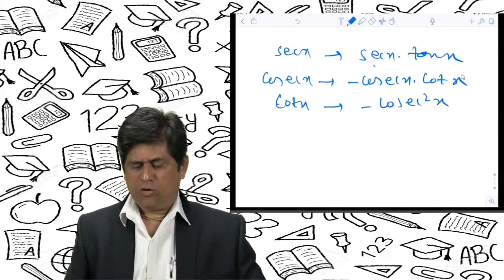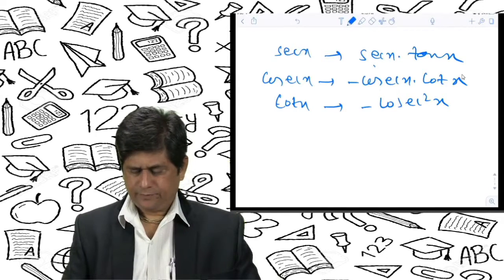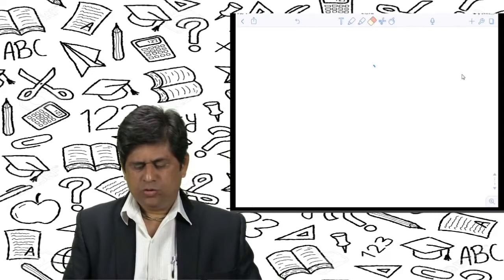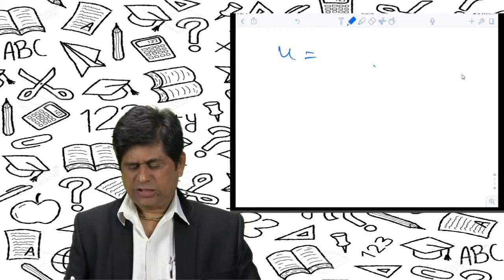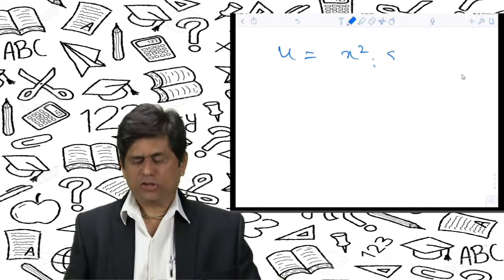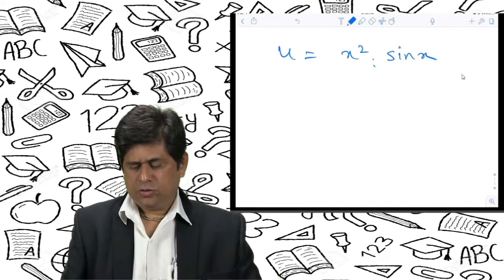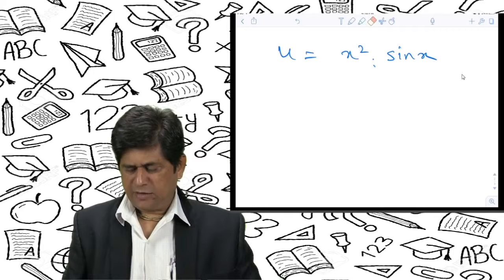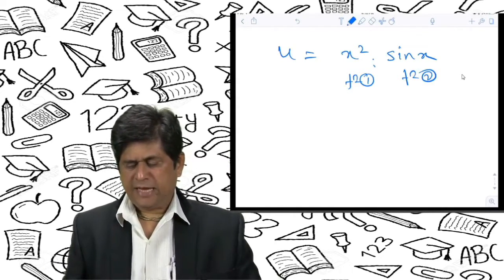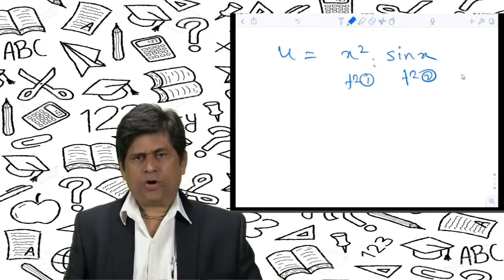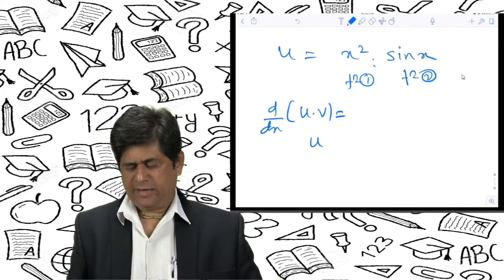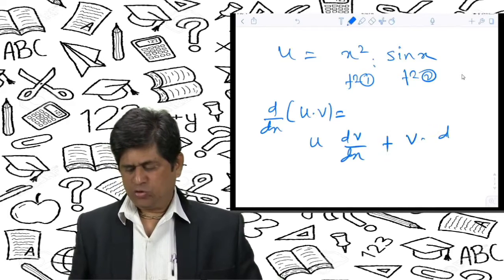Based on these formulas, we will now solve some problems. Suppose you have a function u = x² · sin x. This is a product of two functions: x² is function 1 and sin x is function 2. For the product of two functions, the formula is: d/dx(u · v) = u · dv/dx + v · du/dx. Using this formula, du/dx = x² · d/dx(sin x) + sin x · d/dx(x²).